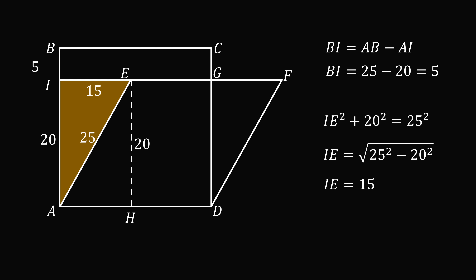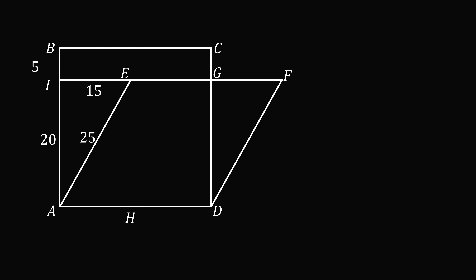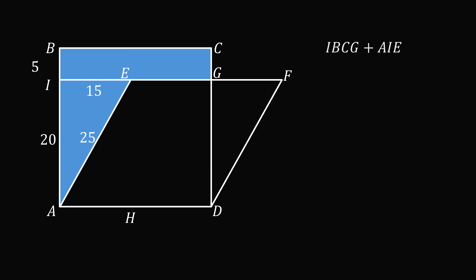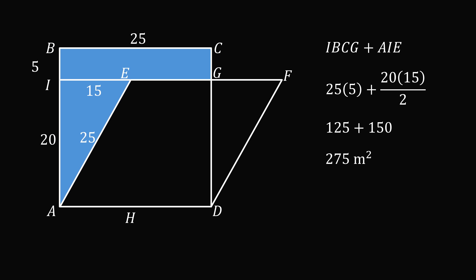Now we're pretty much ready to solve the problem. The area of the shaded region equals the area of the rectangle IBCG, plus the area of the right triangle AIE. We know BI equals 5, and BC is a side length of the square, so it's also equal to 25. So the area of the rectangle equals 25 times 5, and the area of the triangle is 20 times 15 all over 2. This equals 125 plus 150, which equals 275 square meters.